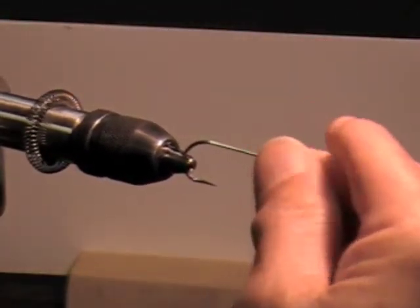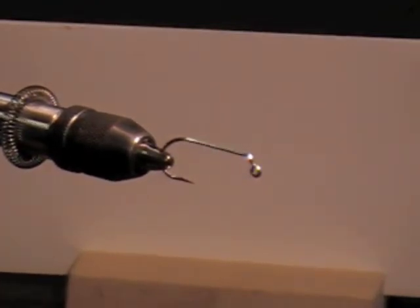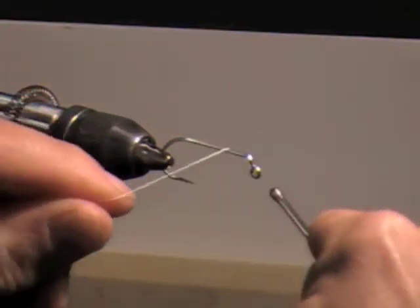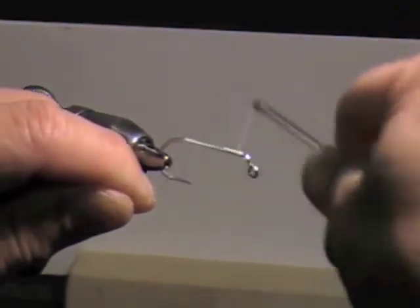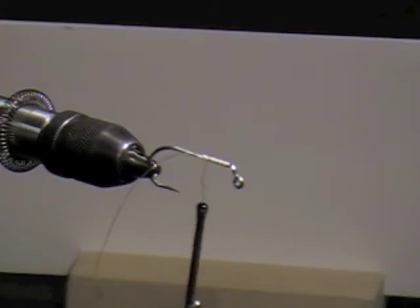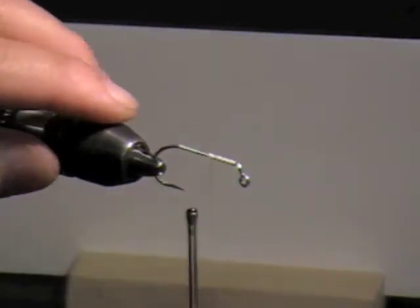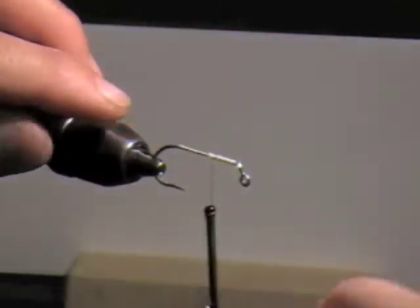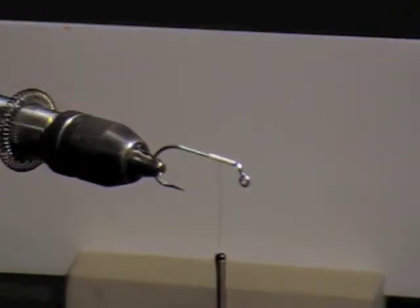So first thing I do is I hook it in this way, and I'll take my thread and I'll start it right at the tip, right at the front and go about, I don't know, about a third of the way back. I tied it on at the front, I went forwards, and then came back backwards. And right about at the one-third point there, I'm going to tie in an eye, an eyeball.